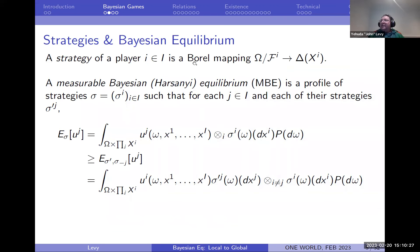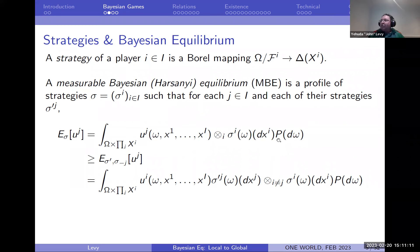A strategy for a player is a measurable mapping that is measurable with respect to his own knowledge sigma-algebra — it's a mapping on the quotient space that assigns to each type a mixed action. An equilibrium is what you would expect: the expected payoff of a player under a given strategy profile. You integrate over all states and all action profiles, giving each state and action profile the measure it deserves, and that should be at least as much as if the player deviates to any other strategy.